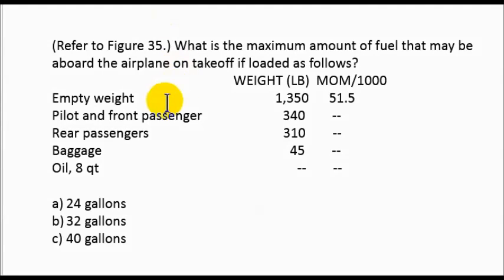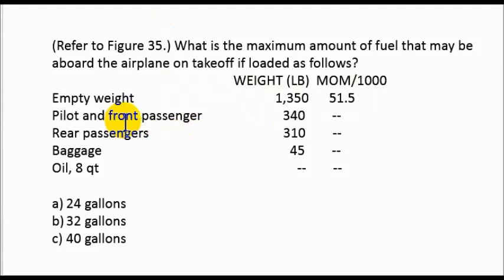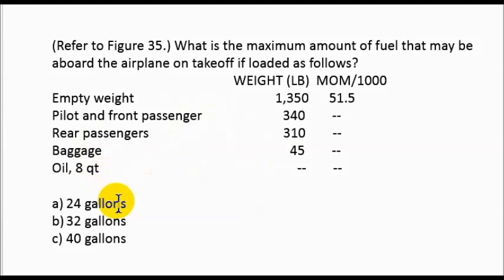We have the empty weight of the aircraft: 1,350, and its load moment: 51.5. We have the weight of the pilot and front passenger, rear passengers: 310, baggage: 45, and the oil. Our answer selections are 24 gallons, 32 gallons, or 40 gallons. So we need to find the maximum amount of fuel.